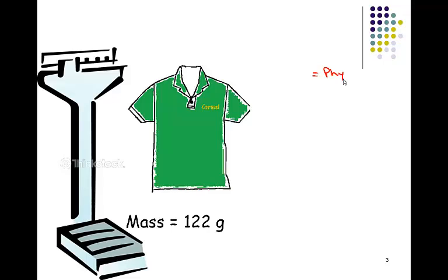Let's consider a green polo. Upon closer observation, we can see that it's clearly green. This didn't change the makeup of the shirt, so color is a physical property. If we were to take this polo and put it on a scale, and get the mass to be 122 grams, we still haven't changed the composition, therefore mass is a physical property.